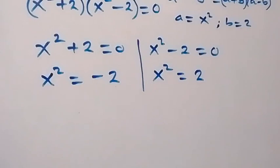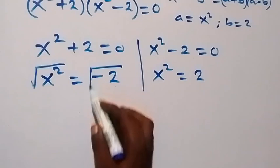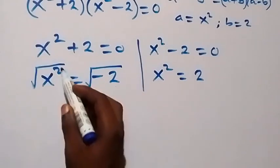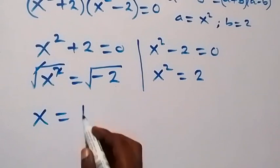Then on this side, we can take the square root on both sides. So we have square root on this side and square root on this side. So square cancel square root and we have x equals to plus or minus.